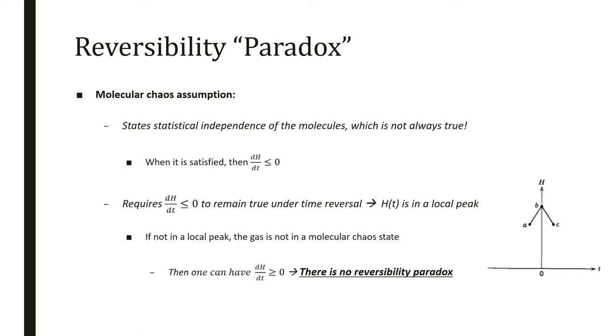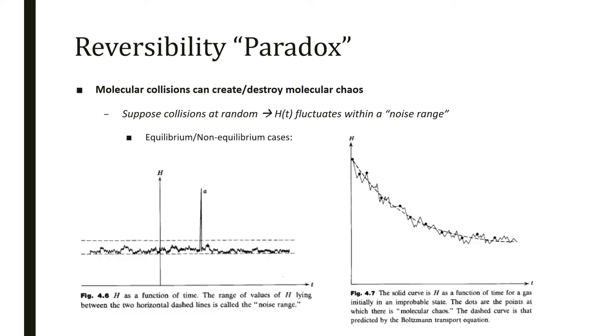Let's look to the figure on the right. If we have state B where molecular chaos is assumed, dH/dt is lower than or equal to zero, we evolve to state C. If we come back to B and reverse in time, molecular chaos is assumed, so dH/dt is lower than or equal to zero, so B evolves to A. But now, if it's not in a local peak, the gas must not be in the molecular chaos state. You can be in state A and have dH/dt greater than or equal to zero to evolve to B. Only at local peaks is molecular chaos assumed. Looking at this, we see there is actually no paradox here.